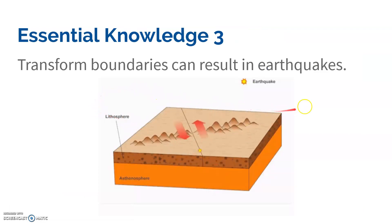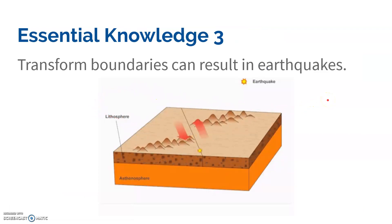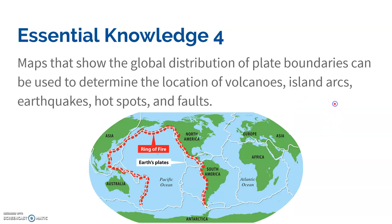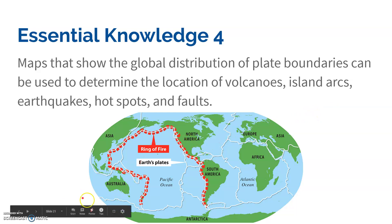The last boundary type is transform boundaries. Transform boundaries are plates that are sliding past each other, and that results in earthquakes. An important one to know is the San Andreas Fault in California, which we talked about in class.